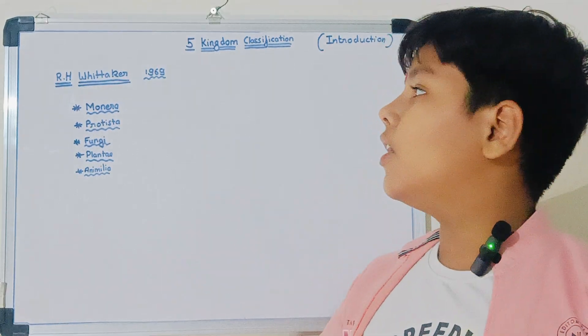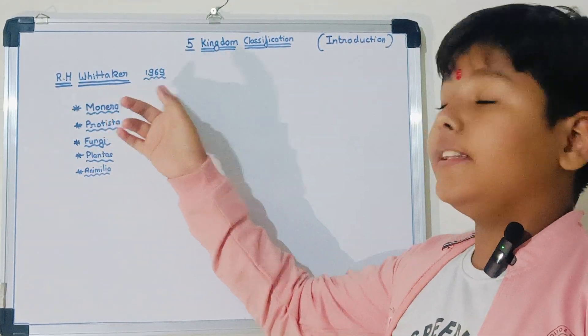The Five Kingdom Classification was done by R.H. Victor in 1969.